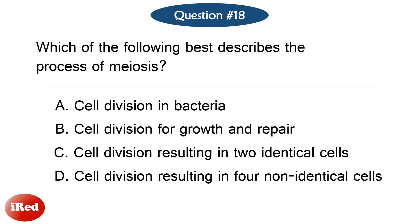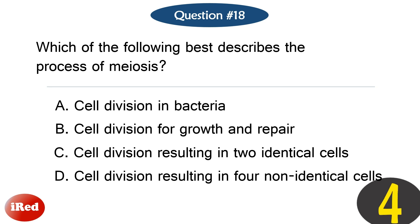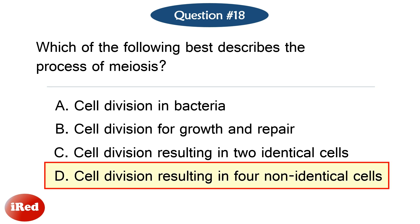Question number eighteen. Which of the following best describes the process of meiosis? The correct answer is letter D: cell division resulting in four non-identical cells.